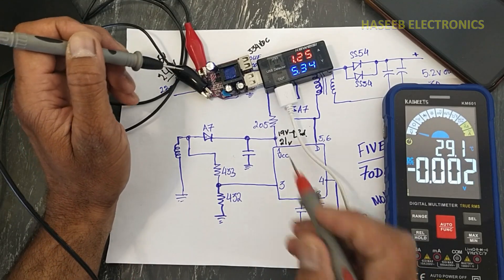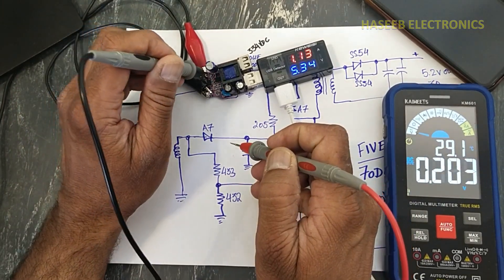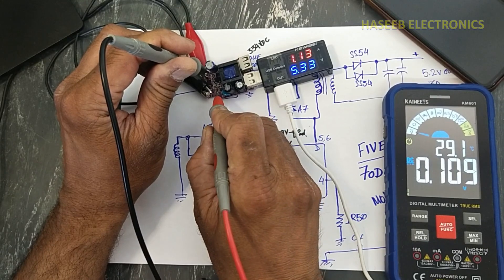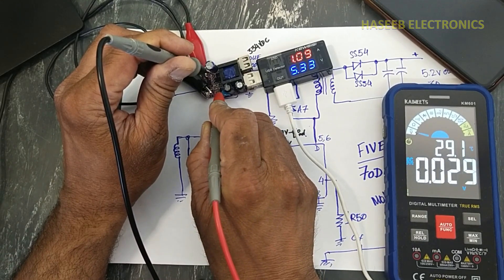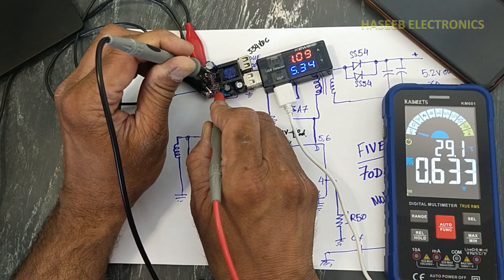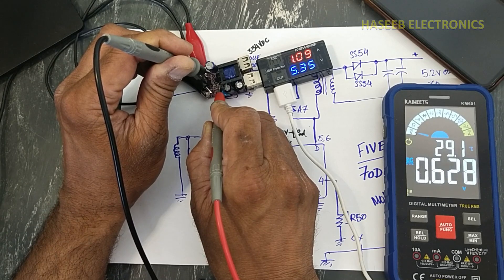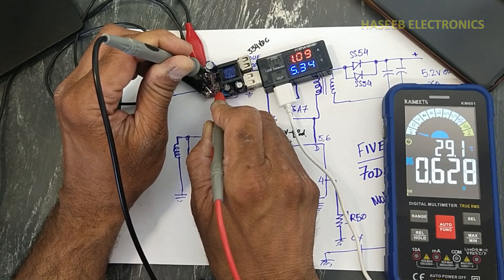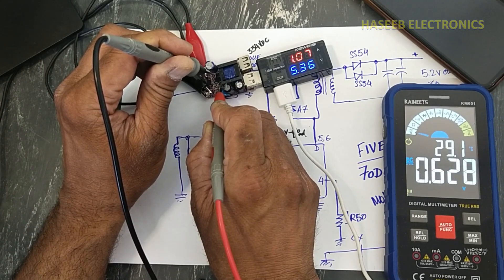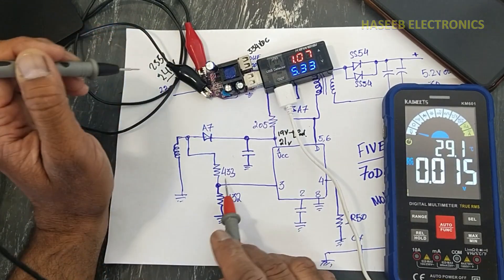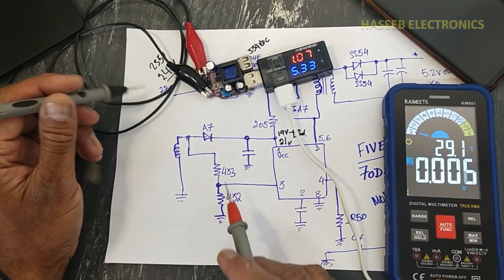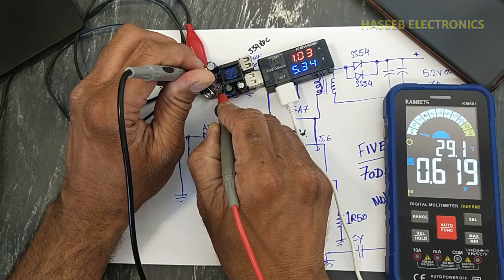Now we will monitor pin number three. Ground and pin number three, it is 0.63 volts. This 0.63 volts are from this voltage divider network. 0.62, 0.66.